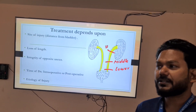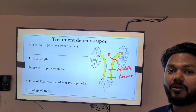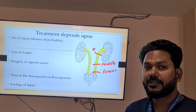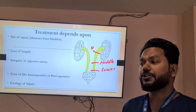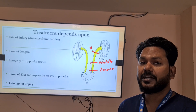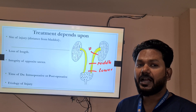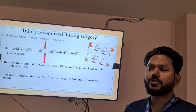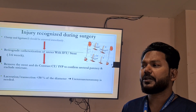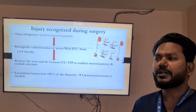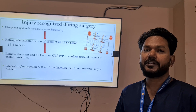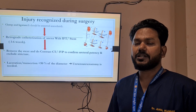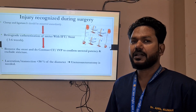Treatment modality depends upon multiple factors: the site of injury — whether in the upper, mid, or lower part of the ureter; how much length of ureter is damaged; the integrity of the opposite ureter; the time of diagnosis — whether intraoperative or postoperative; and the etiology of injury. If injury is recognized during surgery and the causative agent is a clamp or ligature, it should be removed immediately, followed by retrograde catheterization with an infant feeding tube or stent for 3 to 6 weeks, then contrast CT or IVP to confirm ureteral patency and exclude a stricture.